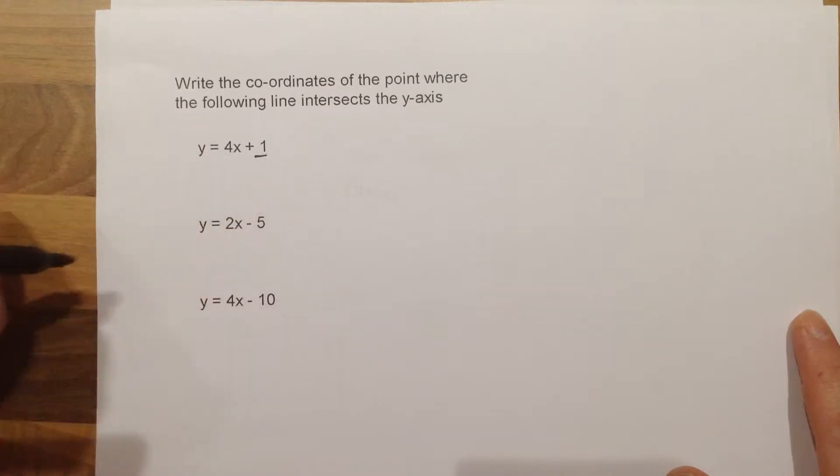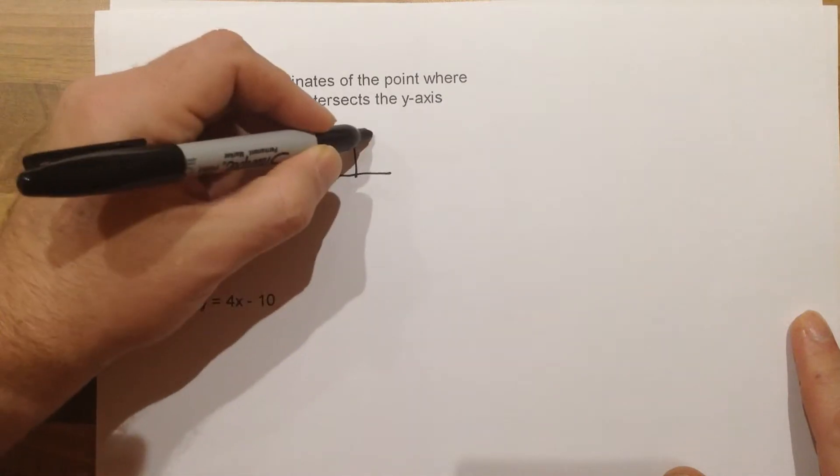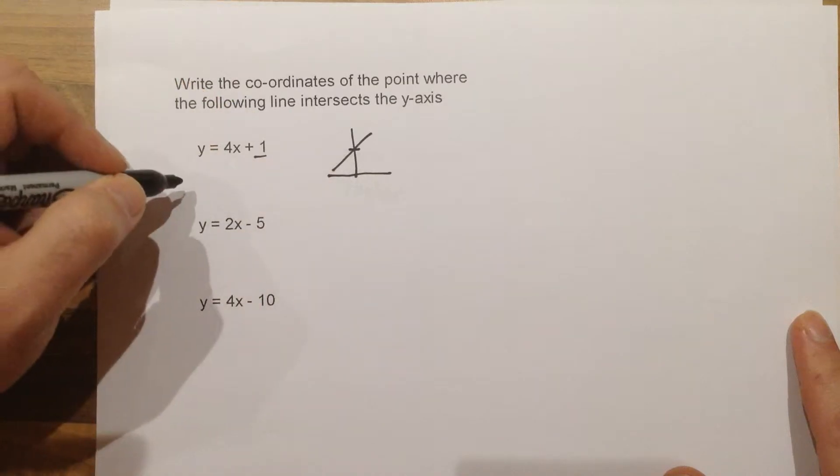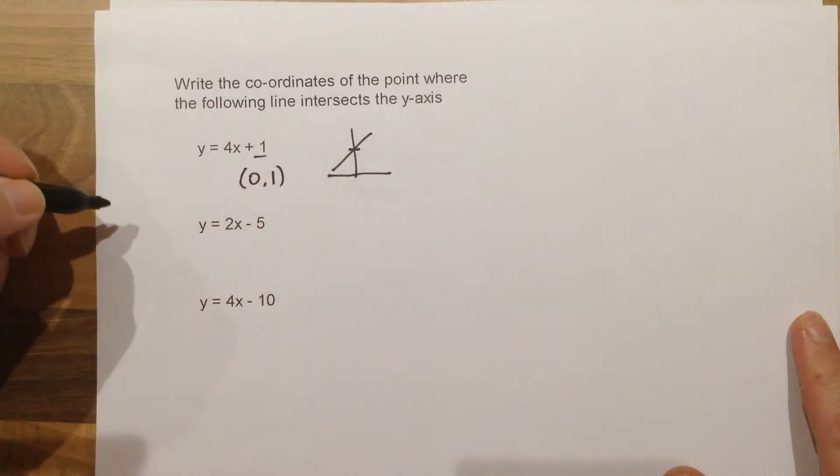this gives us at what number it crosses the y-axis. And obviously if we've got a diagram, we've got a graph crossing, if this one crosses at 1, the coordinate of that point would be 0, 1, because it is on the y-axis.